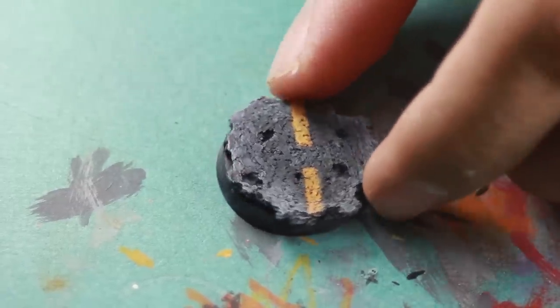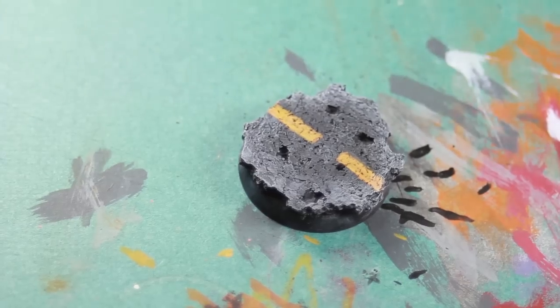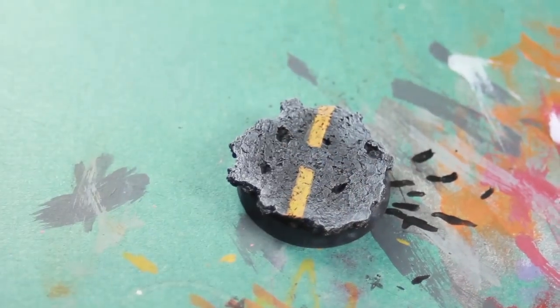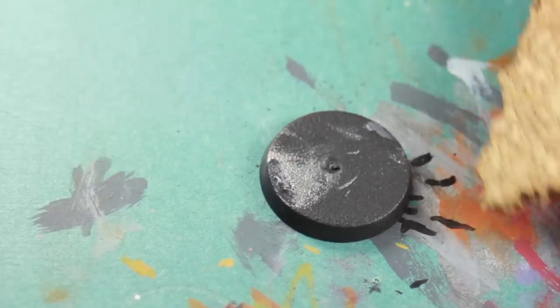Hello, Jay here. Welcome to Ann's Battle and today we're going to make an asphalt road. Now what you're going to need is some hobby cork and your base.